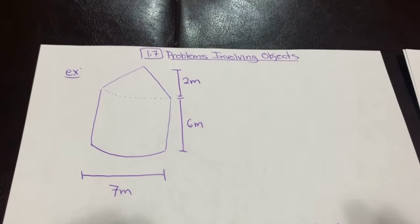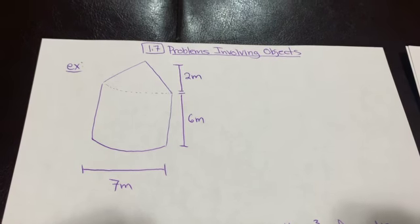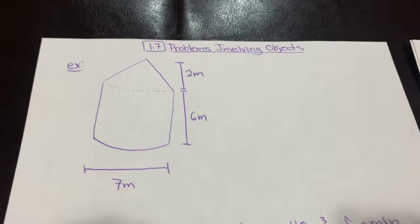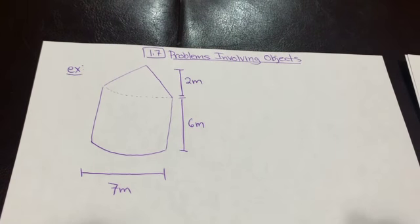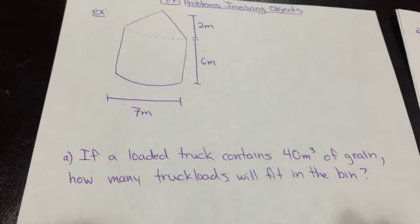All right, Math Tens, this next problem involves what we call a granary. This shape here is kind of a cylinder base with a cone on top and some dimensions are given. And we're given two parts of a question.